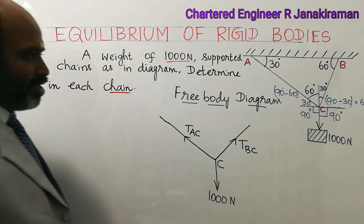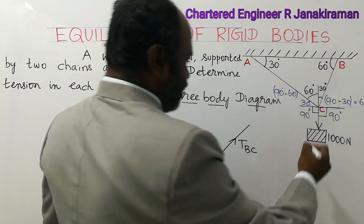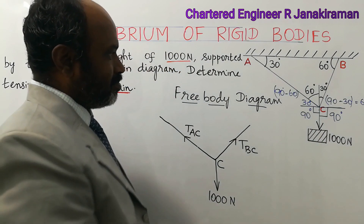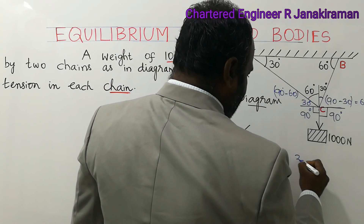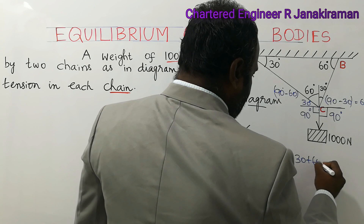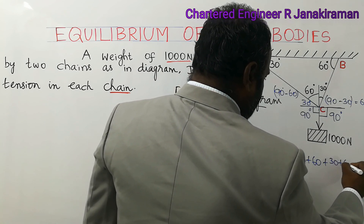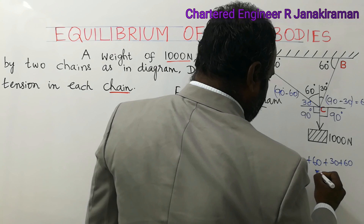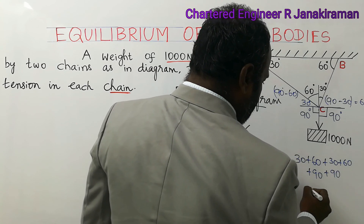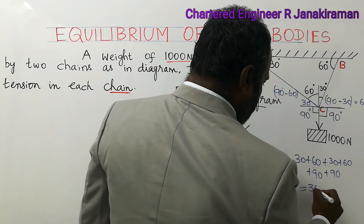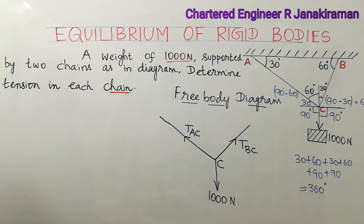If we add all the angles, the total angle of a circle is 360 degrees. You can check before drawing the free body diagram: 30 plus 60 plus 30 plus 60 plus 60 plus 90 plus 90 equals 360 degrees. So the angles we found are correct.